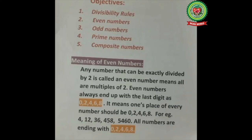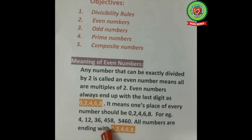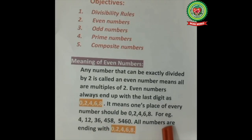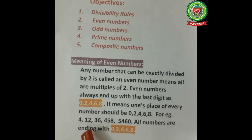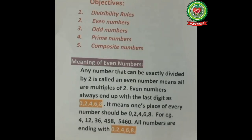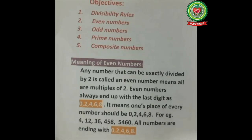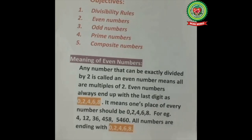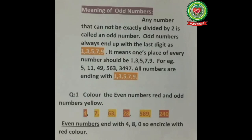Let's look at an example. We have the numbers 4, 12, 36, 450, 58, 546, and 60. All these numbers are ending with zero, two, four, six, or eight. So students, even numbers always end with zero, two, four, six, or eight.